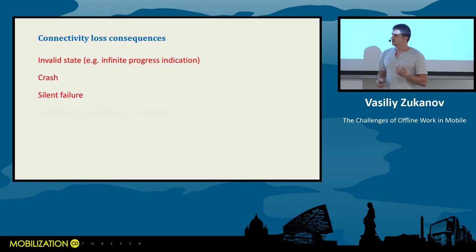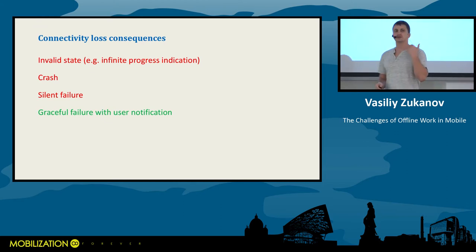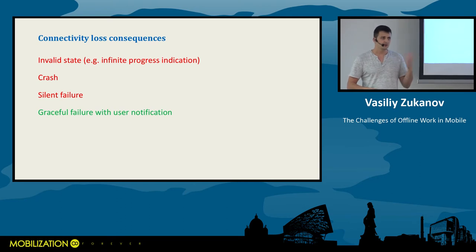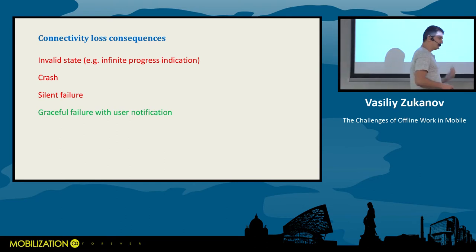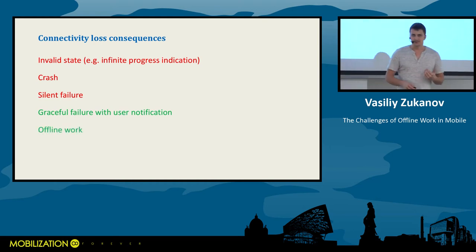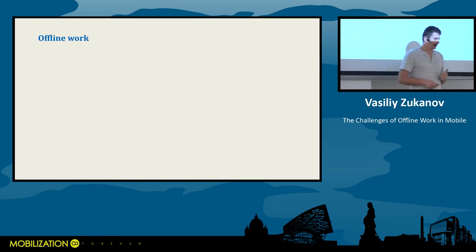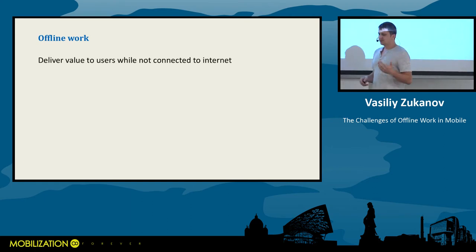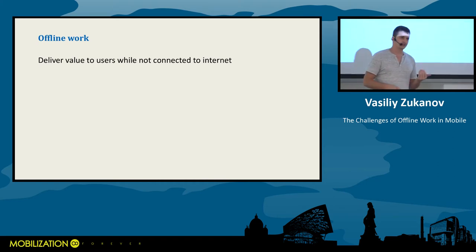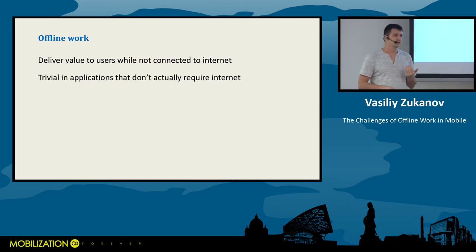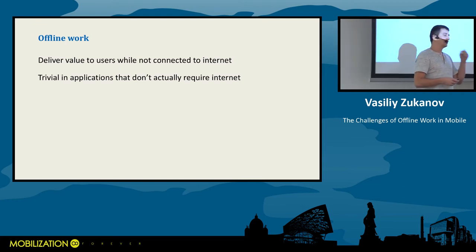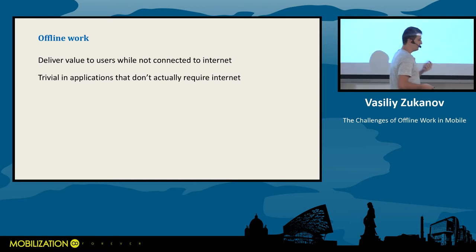These three options are not optimal. Another option we may employ is basically gracefully failing the functionality and letting the user know that something bad happened. We just do nothing and show the user a dialogue that says 'sorry, no internet connection, I cannot do that.' That's a valid option. And another valid option is working offline. But what does it mean to work offline? Let me define it in my own words, because I haven't found any standard definition. Working offline is when our application delivers value to the user without internet connection.